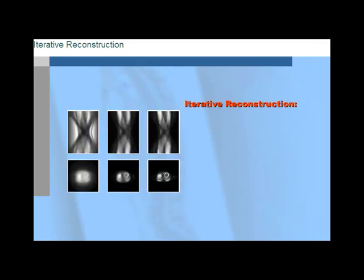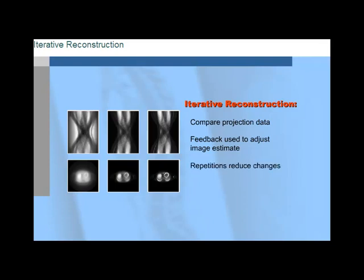Now we're ready for what we call IR, or iterative reconstruction. It's helpful to remember that the word iterative means repeat. The basic concept of IR is to compare the numerical projection data and the measured projection data in a feedback loop. The feedback from this comparison is used to adjust the image estimate and to minimize the difference between these two data sets. As the process is repeated, the derived changes to the image estimate become small and the estimate converges on the solution image. The number of iterations required to reach convergence is dependent upon which IR algorithm is utilized. Optimal resolution and contrast are used as a measure of convergence, and rapid convergence is a necessary prerequisite for practical clinical implementation.